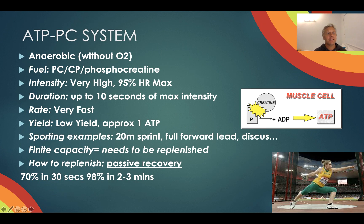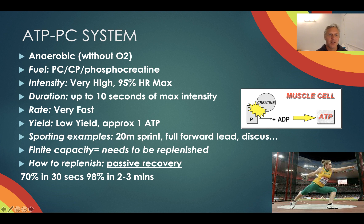The ATP-PC system is anaerobic — it doesn't need oxygen. It's fuelled by a chemical substance called phosphocreatine or creatine phosphate. That breaks down very, very quickly. You can see it's a very simple and quick chemical reaction that gives us immediate energy to rebuild an ATP. For every creatine phosphate molecule we get one ATP — or 0.7, depending on what text you read. Because it's such a simple chemical reaction, it's really, really quick. It only gives us one ATP, so we say it has a low yield compared to the other energy systems. The classic example would be the discus thrower, the shot putter, the 100 metre sprinter. The fuels run out and they need to be replenished, and the only way we can do that is by stopping exercise and having a passive recovery.